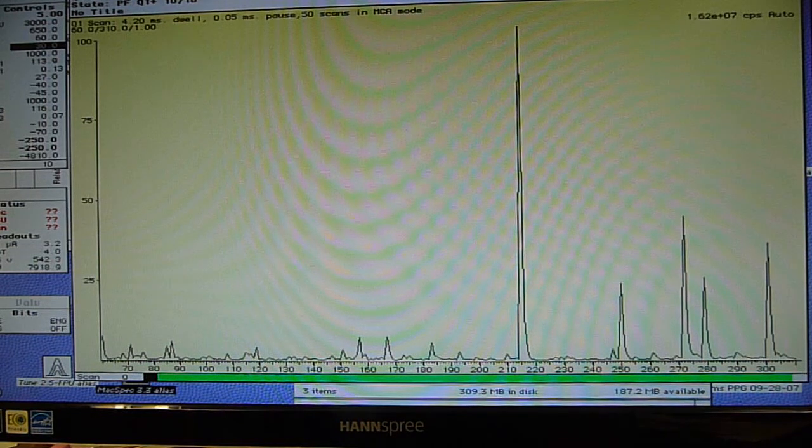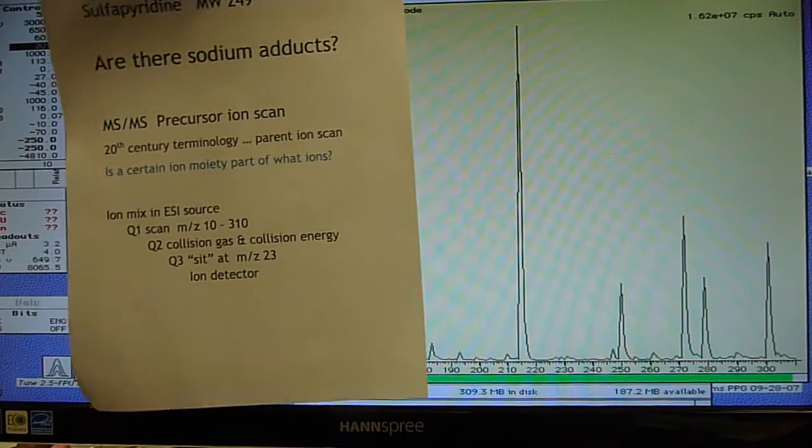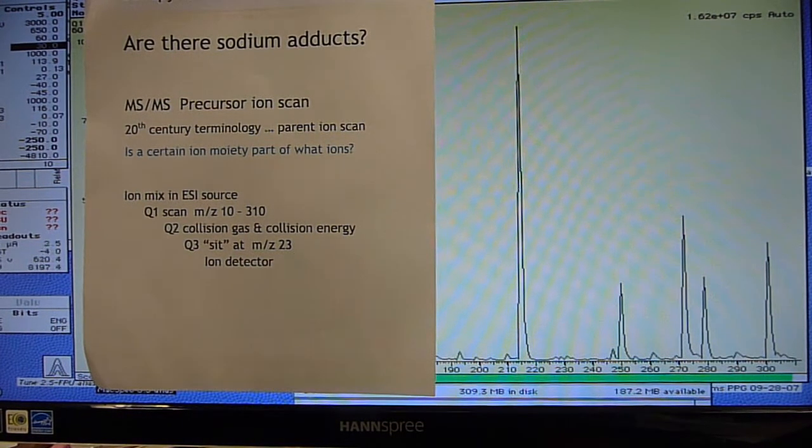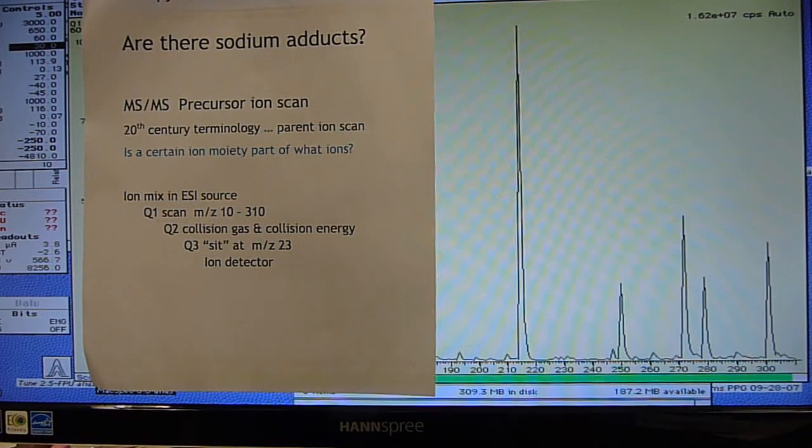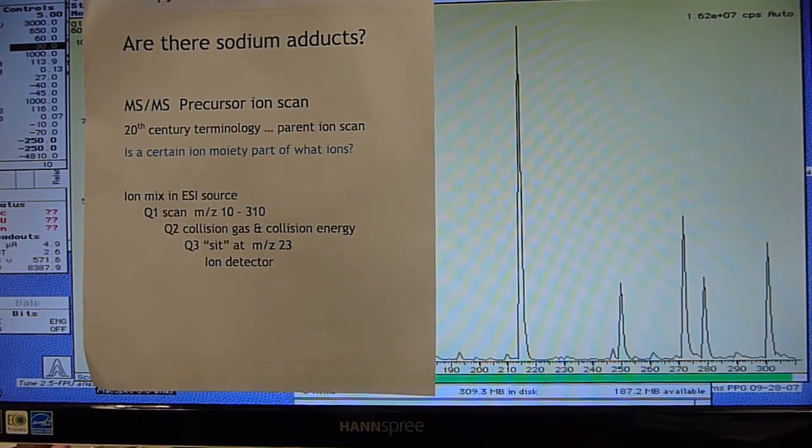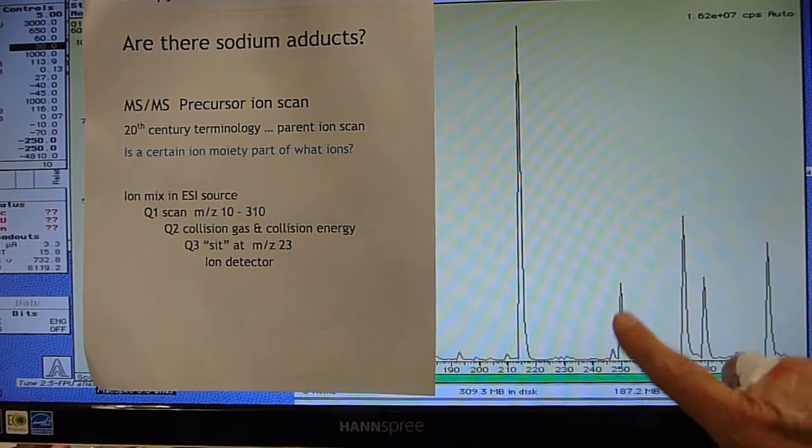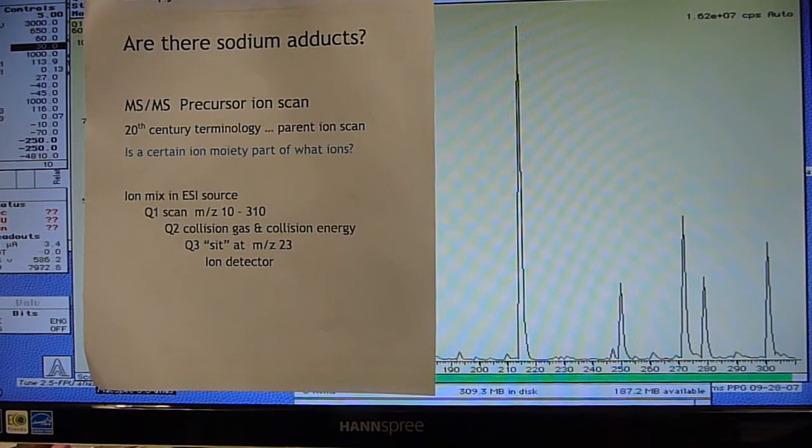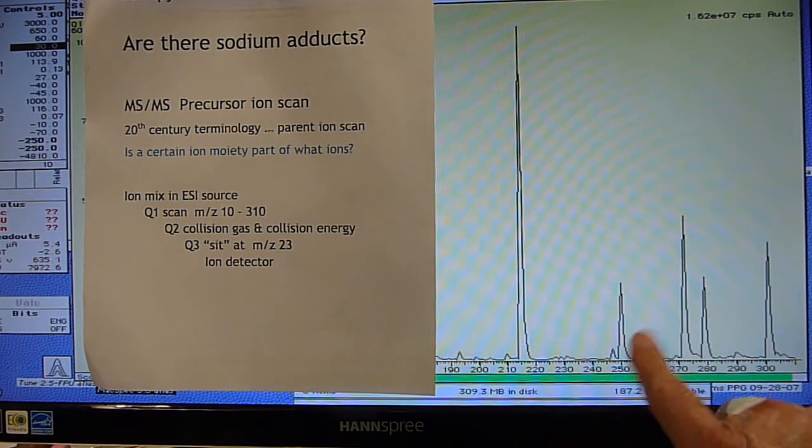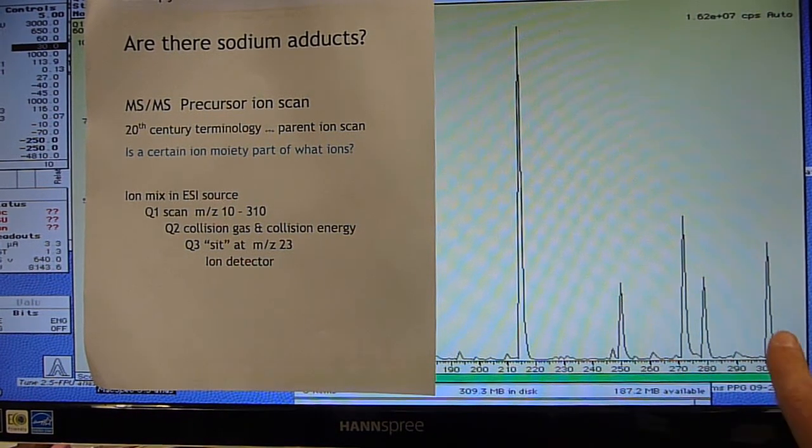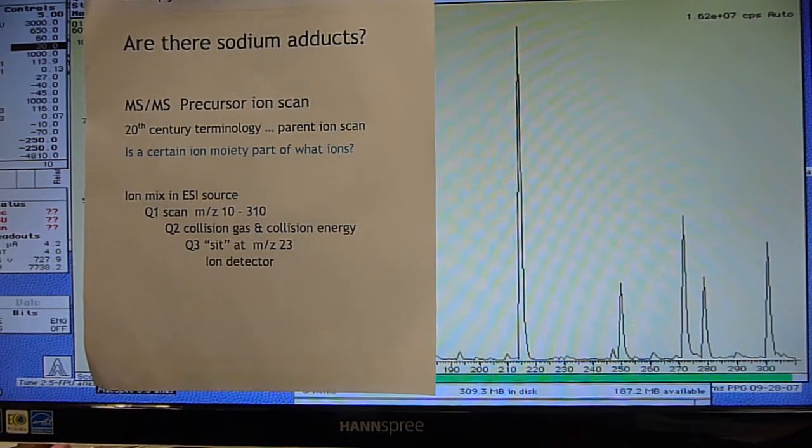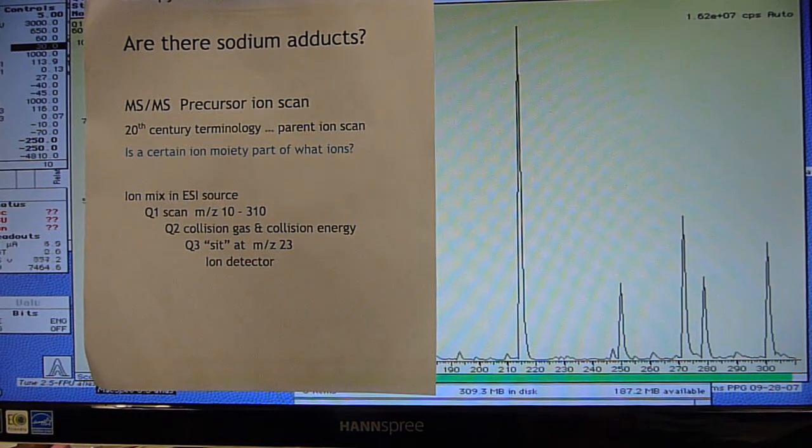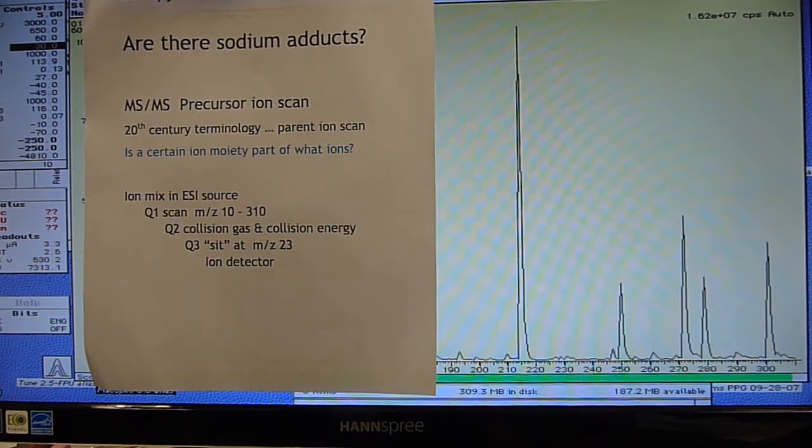For this video we're going to take a look at a precursor ion scan. We're going to ask the question, are there sodium adducts? Typically a sodium adduct if two ions are 22 apart from each other that's usually a good indication. This is the M plus one for sulfapyridine and then this is the M plus 23. So maybe this is a sodium adduct, but then also this is 22 higher. So maybe this is also a sodium adduct. And so what we're going to ask the question is, is there a certain ion moiety that's part of these ions? And that moiety is a sodium ion.